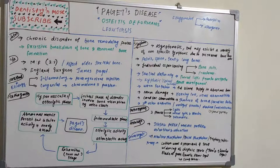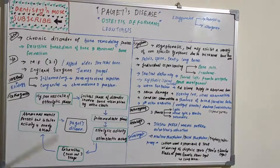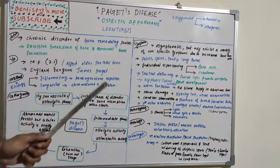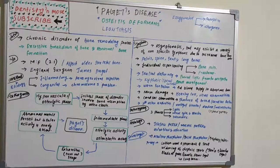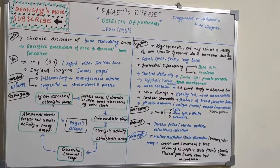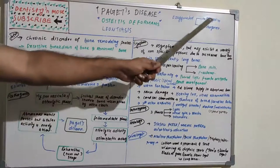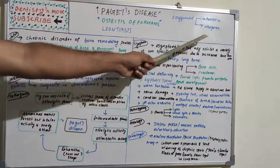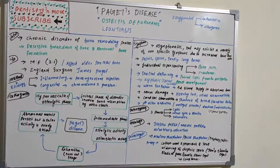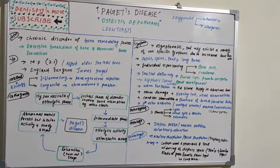Welcome back to a new session on dentistry and more. Today's topic is Paget's disease, also known as Osteitis Deformans or Leontiasis. It is a bone remodeling disease where normal bone undergoes resorption and new bone formation, but if there are exaggerated or abnormal changes in resorption and osteogenesis, the disease is known as Paget's disease.